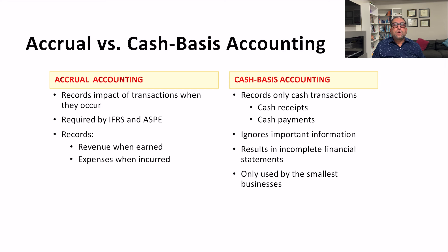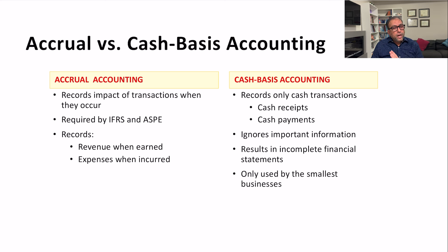The crux of accrual accounting is this: we recognize revenue when it is earned — we do not wait until we collect the money. For expenses, we also recognize them when they are incurred — we do not wait until we make the payment. Cash basis accounting, on the other hand, records only cash transactions: cash receipts and cash payments.